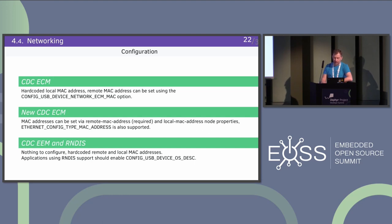I haven't heard people complain about it, but I looked at it while preparing the documentation and found it's not nice. The same issue applies for CDC-ECM — that's a typo — and the new ECM implementation supports setting the MAC addresses using device tree, both remote and local. If you do not provide a local MAC address, it will be a random one, but there's also an API implemented to set it from the shell — you can change the local MAC address from the shell.